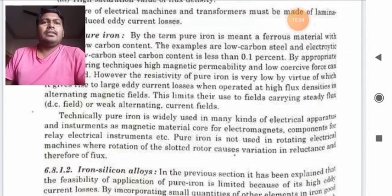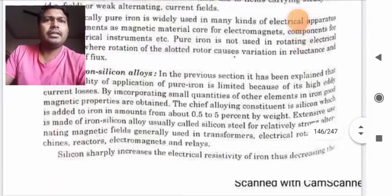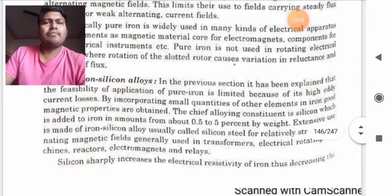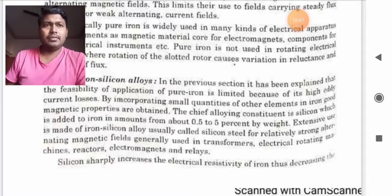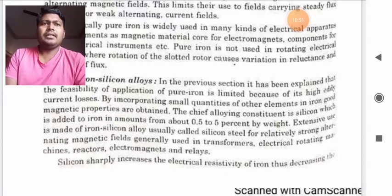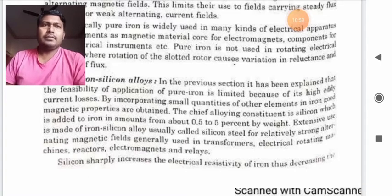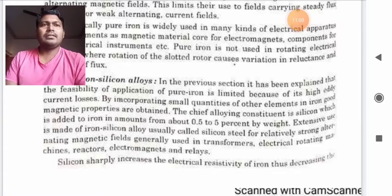Iron-silicon alloys. Now we will discuss about iron-silicon alloys. In the previous section, it has been explained that the feasibility of application of pure iron is limited because of its high ED current losses. By incorporating small quantities of another element in iron, good magnetic properties are obtained. The chief alloying constitution is silicon, which is added to iron in amounts from about 0.5% to 5% by weight.